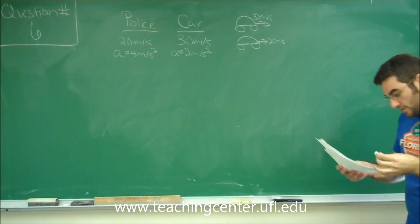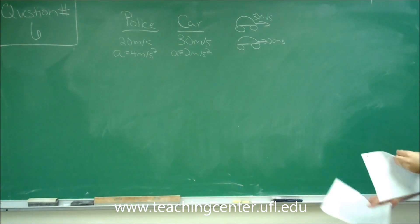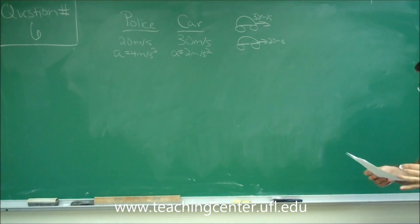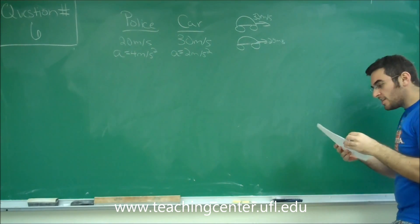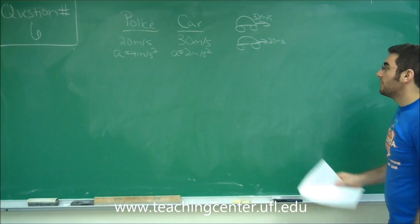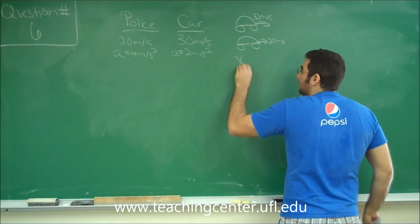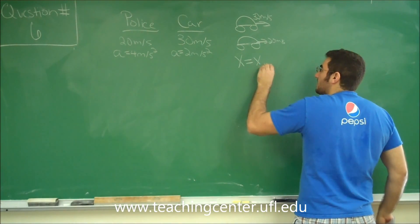So it says how far does the cruiser travel until it catches up to the car. So we're looking for the distances where the car is able to be pulled over by the police car. So in order to do this we go back to our distance equation.